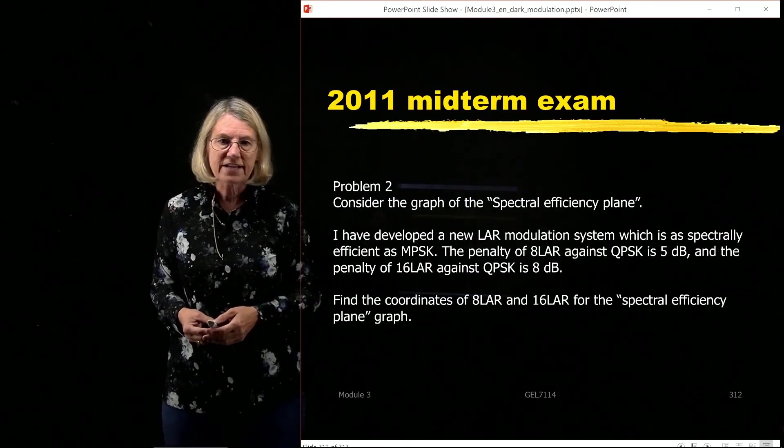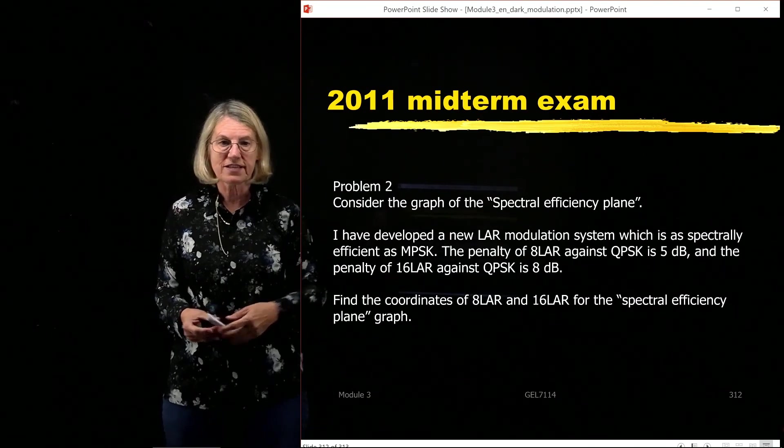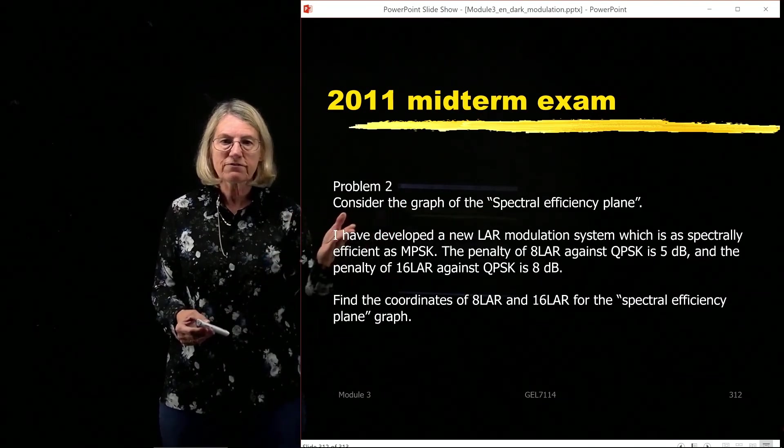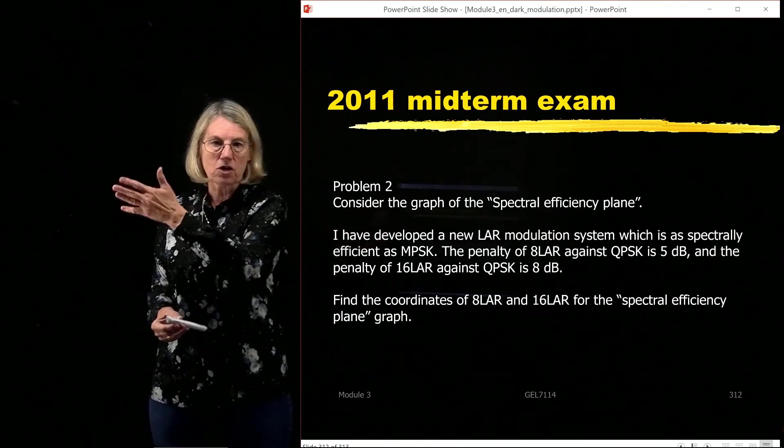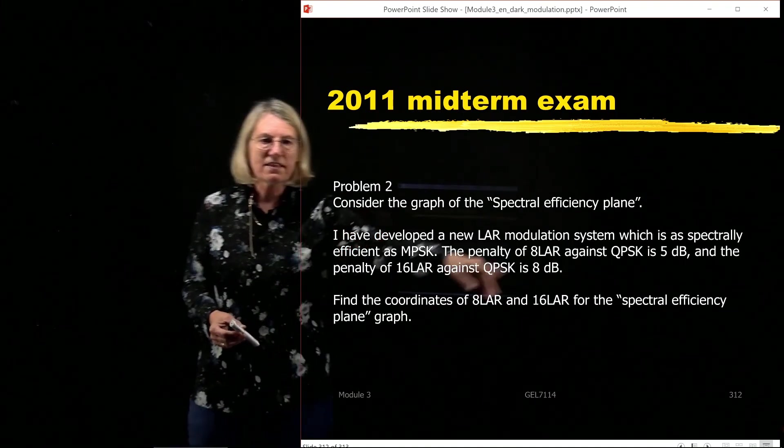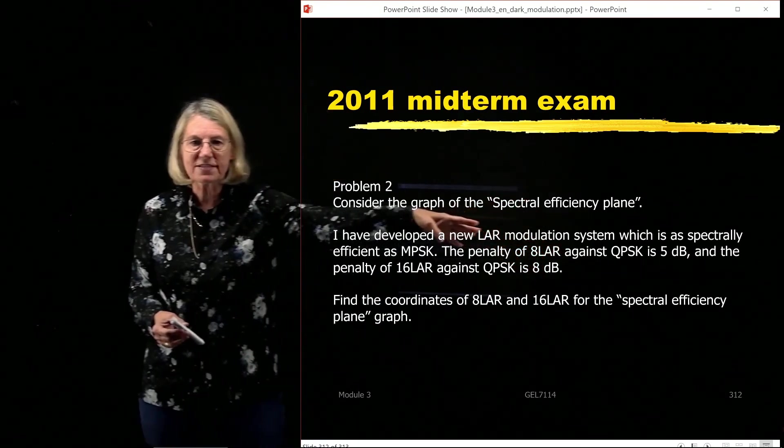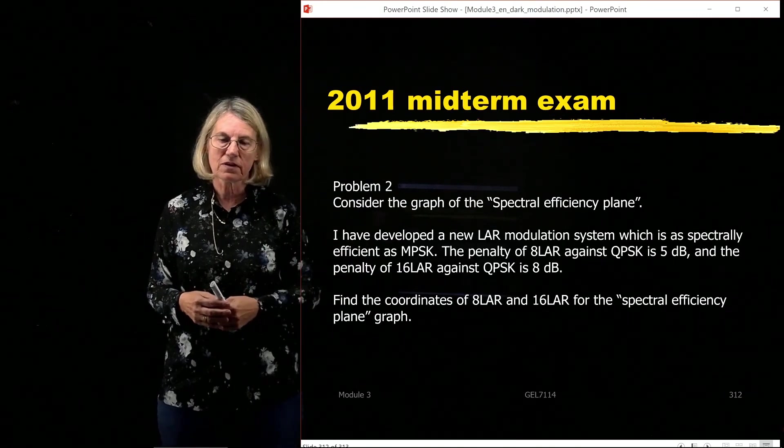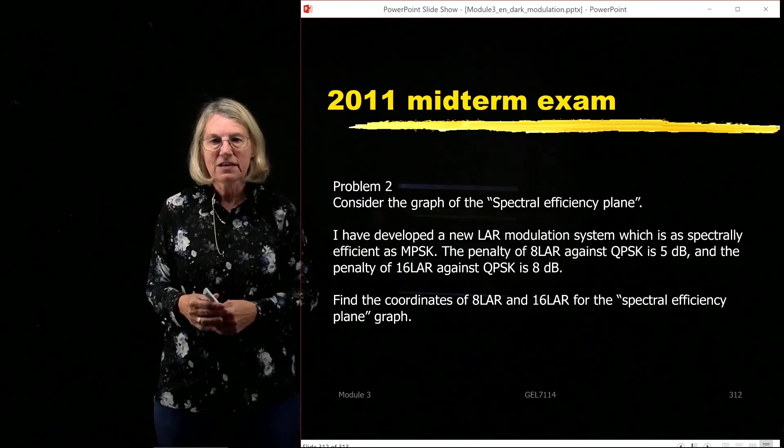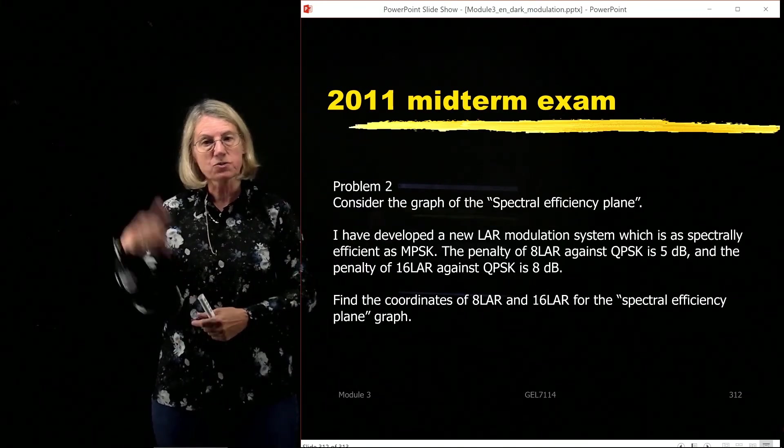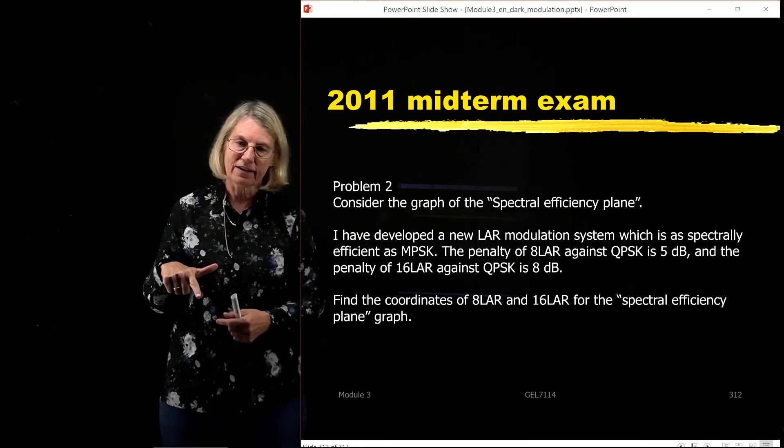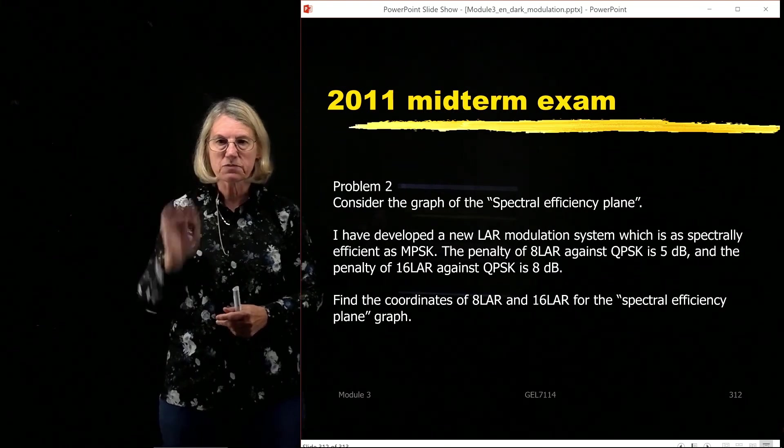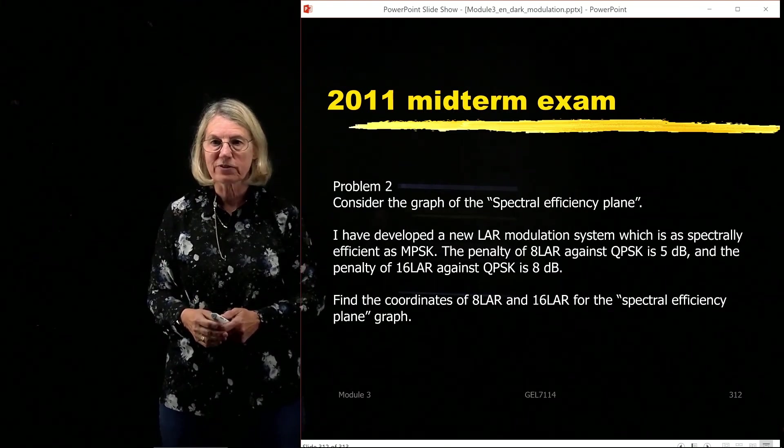Or could ask about a modulation format we haven't seen before. So I say there's some modulation system, and I tell you that the spectral efficiency is the same as MPSK. So okay, I know it's log 2m. But then I say that the penalty vis-à-vis QPSK is a certain number. So I don't give you an equation, but I do give you the penalty with reference to QPSK. So with this information on the spectral efficiency and on the Eb over N0, you should be able to find a coordinate and place each of these modulation formats also on the spectral efficiency plane.